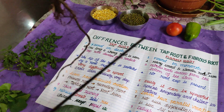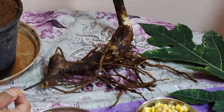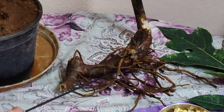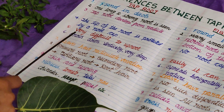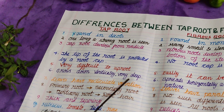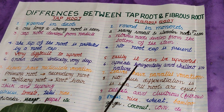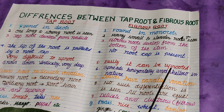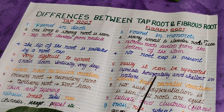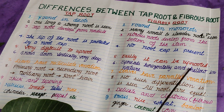The tap root grows vertically, very deep, and it cannot be uprooted easily. But in fibrous roots, they are very shallow — they spread horizontally and can be easily uprooted, as you see in grasses.